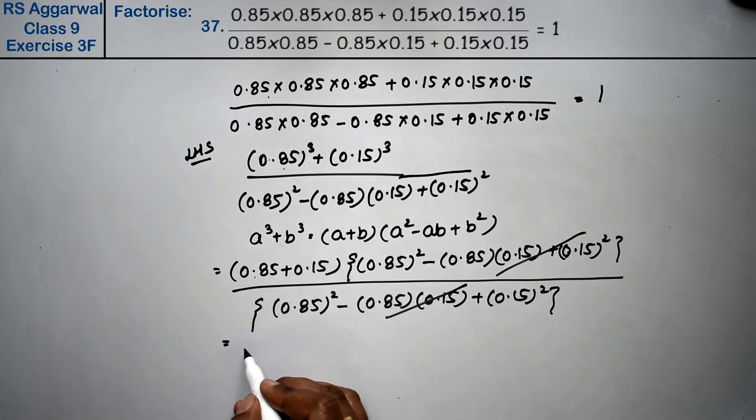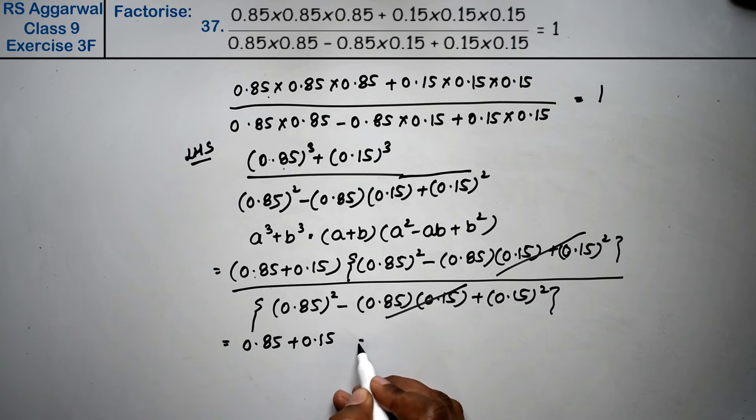So this plus this, 0.85 + 0.15, how much is it? 5 plus 5 is 10 carry 1, 9 and 10 carry 1, equals 1.